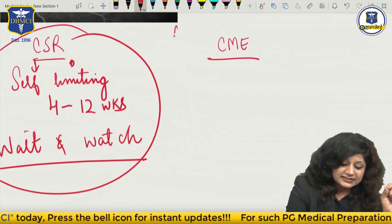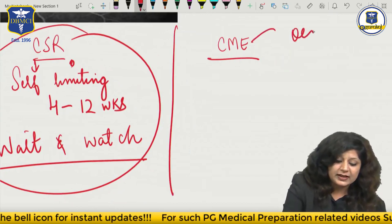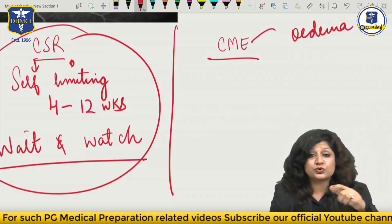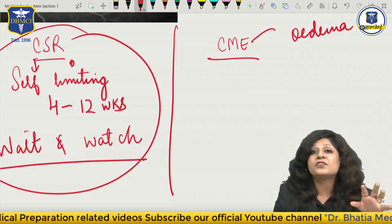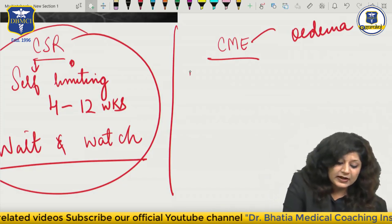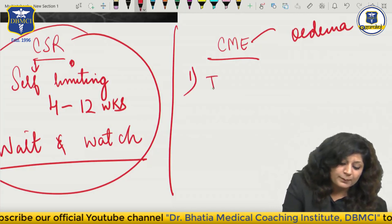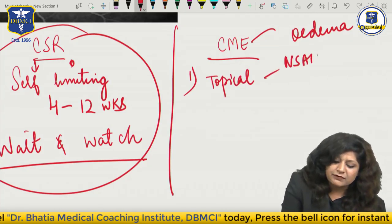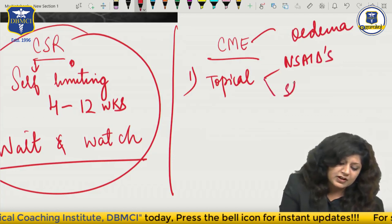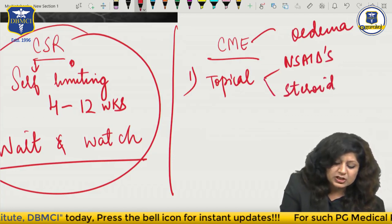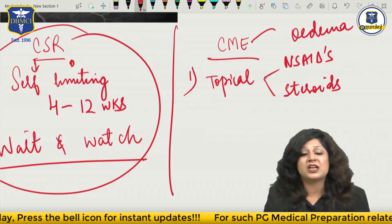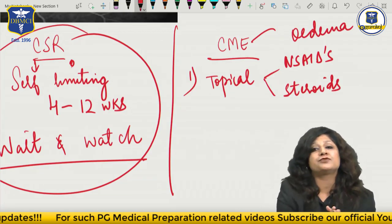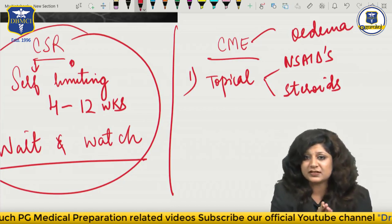But what about CME? This was actually edema. Because this is edema, there was inflammation, so you have to treat it - it will not resolve on its own. What will you give here? We will give topical anti-inflammatory drugs. Try the NSAIDs. If NSAIDs don't work, then give the steroids. Especially in cataract surgery - the Irvine-Gass syndrome - all these cases, you have to give topical NSAIDs or topical steroids.